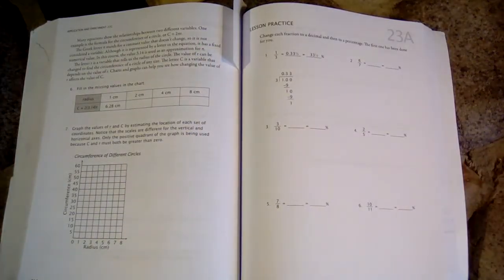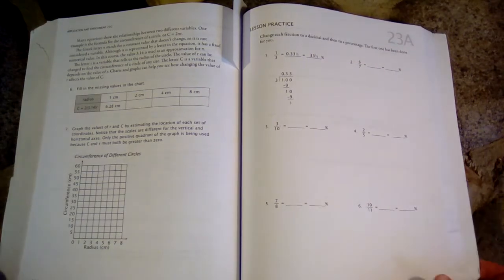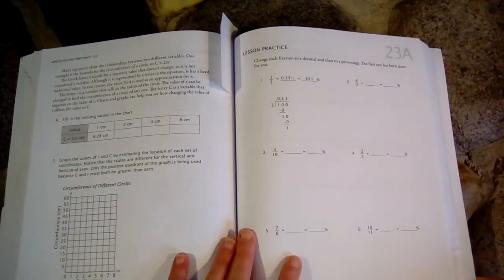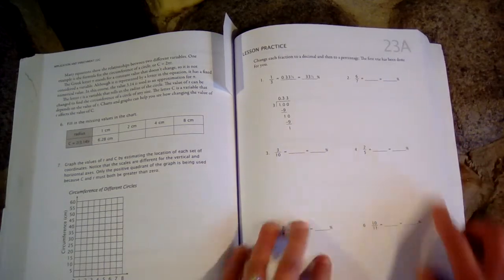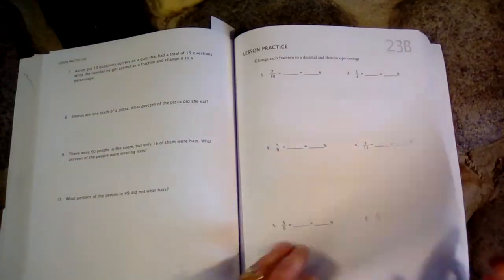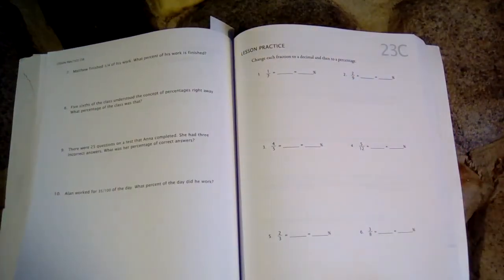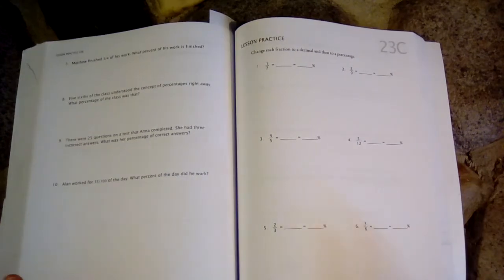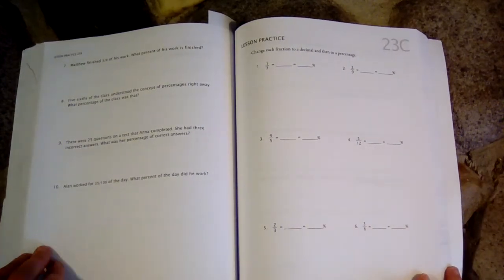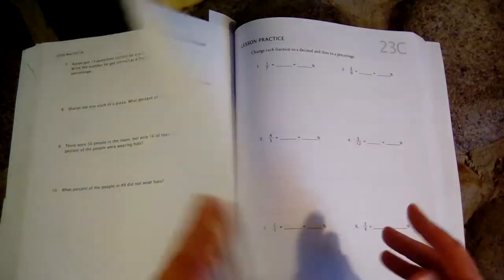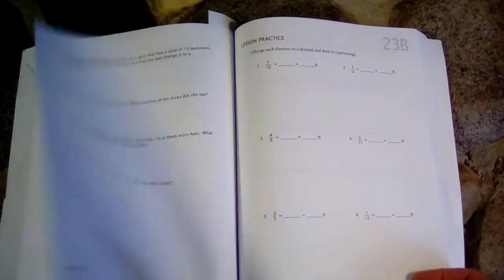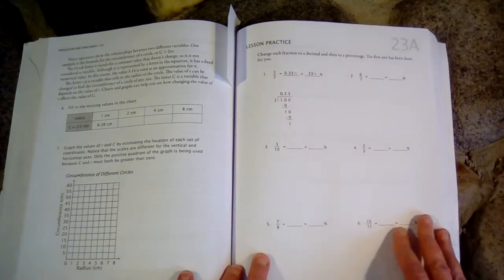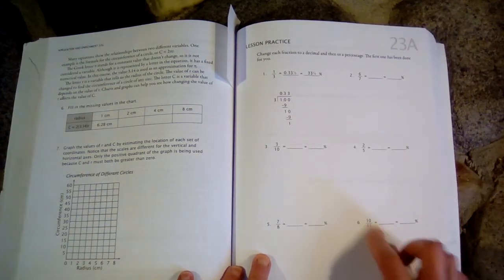Then we have 7 worksheets that go along with it. So the first 3 worksheets are called A, B, and C. And these 3 worksheets cover what was explained on the DVD for that week. Those are the only kinds of problems on these 3 worksheets, specifically explaining what was just on that DVD.